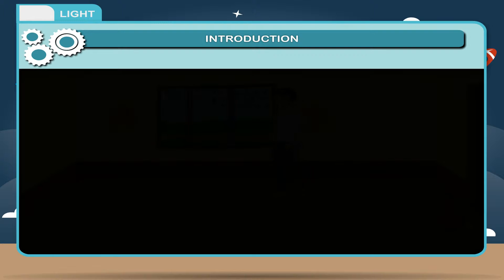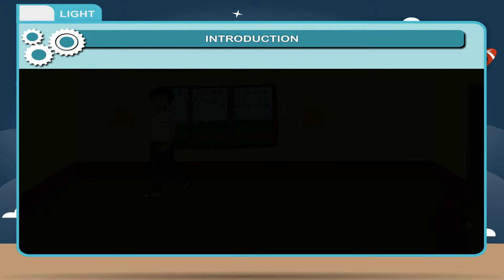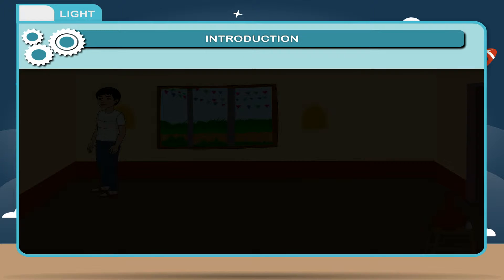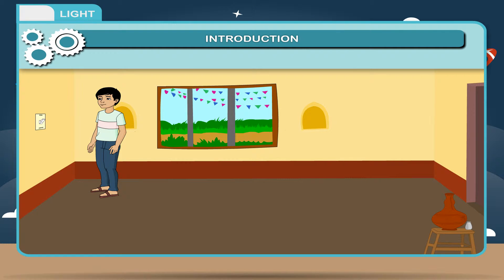For example, when we enter a dark room, we are unable to see the things present there. But as soon as we switch on a bulb, each and every object in the room becomes visible to us. Thus, we can see the things only in the presence of light.